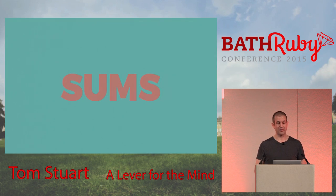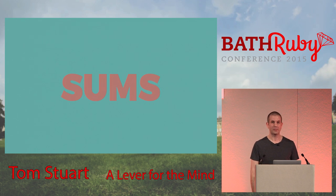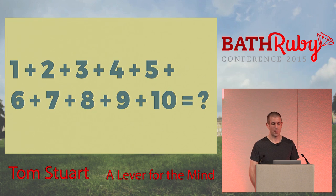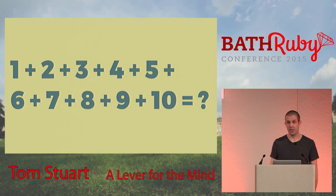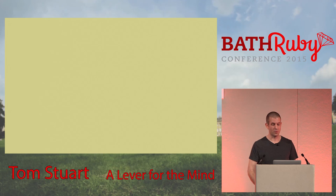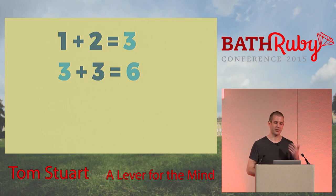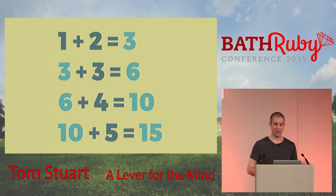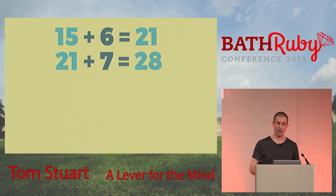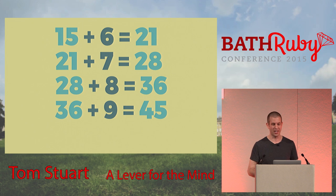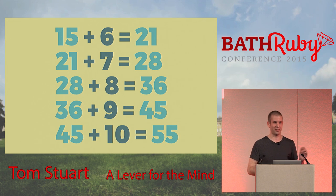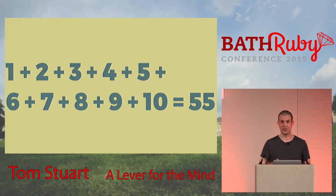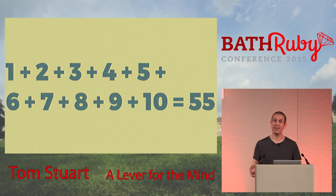This technology is so groundbreakingly useful that it becomes second nature, and we get used to working in this abstract world. Numbers feel very simple and obvious to us, but they only exist because people observed the real world, spotted patterns, and built abstractions to represent those patterns. Once we have numbers, we need other layers of abstract ideas to make them easier to work with. Here's an example: taking the sum of lots of numbers. What's the sum of all the numbers between 1 and 10? That's not too hard to work out by hand: 1 plus 2 is 3, plus 3 is 6, plus 4 is 10, plus 5 is 15, plus 6 is 21, plus 7 is 28, plus 8 is 36, plus 9 is 45, plus 10 is 55.